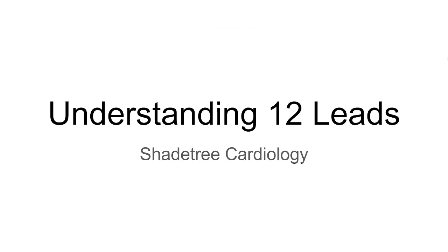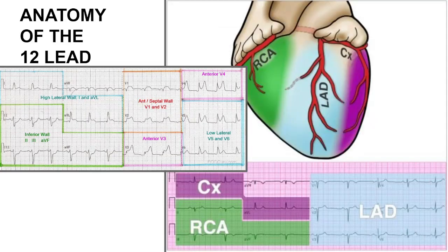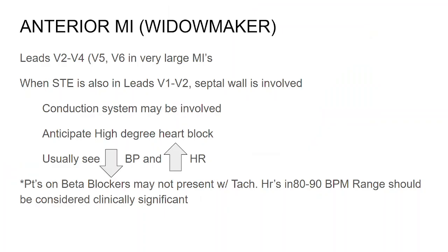Hello and welcome back. Today we're going to cover the Widowmaker. This will be part three of the Understanding 12 Leads series — part three because there are three main coronary arteries we really have to cover when talking about STEMI. Let's jump right into it.